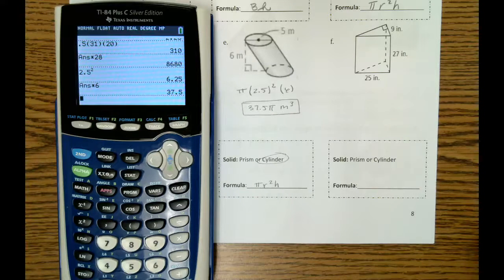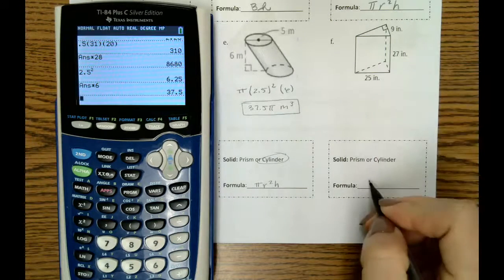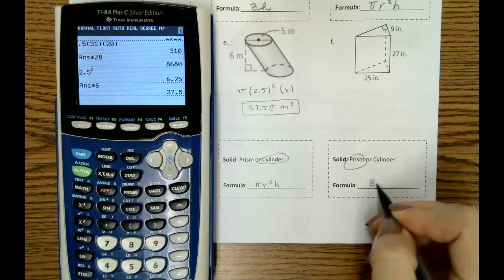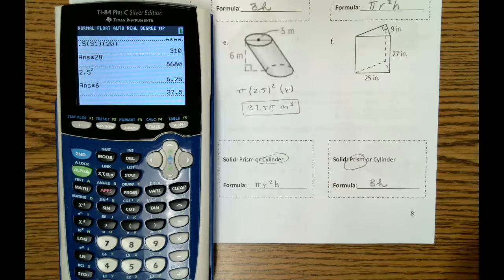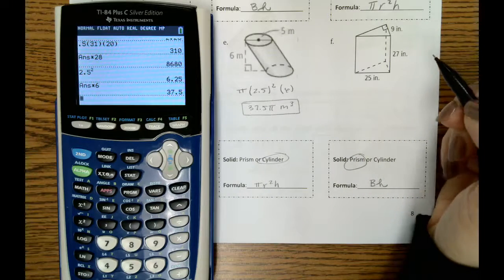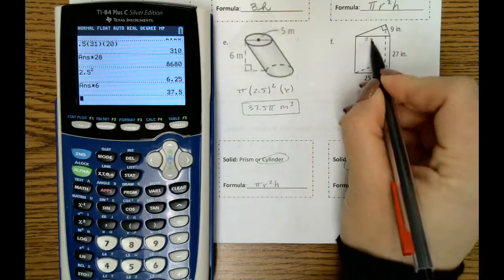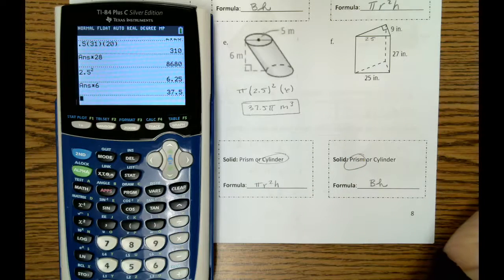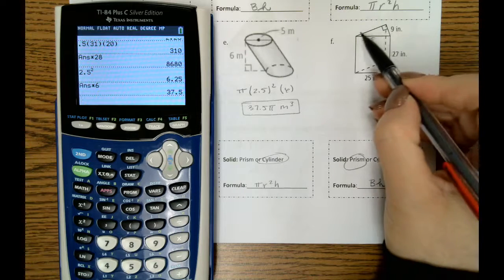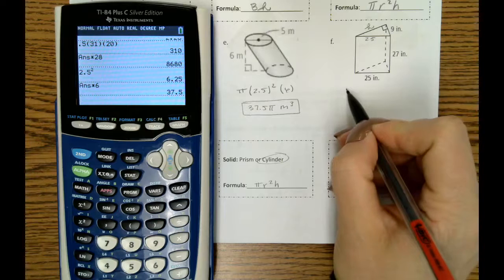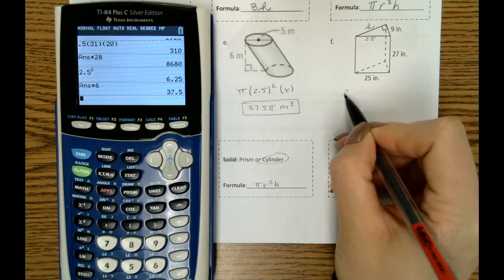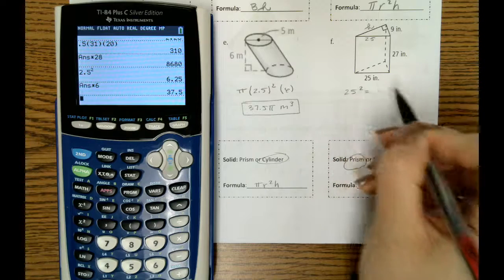All right, last question is letter F. So here this is a prism. So this will be the area of the base times height. So if we look at our triangular base, it has a measurement of 25 for the hypotenuse and 9 for the base. So we need to find the height, which is h, to be able to find the base area. So we're going to do Pythagorean theorem to find that.